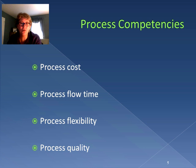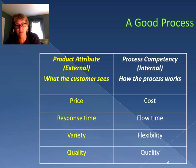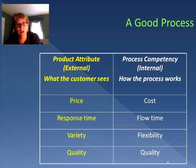So when we bring this all together, we're saying that what the customer sees — the external attributes of the product — have to relate directly to the process competency, how the process works. So a good process will create the required product attributes. The price, which is what the customer sees, relates directly to how much it costs to make. How quickly the customer receives it is related to how quickly we can get it through our process, the flow time.